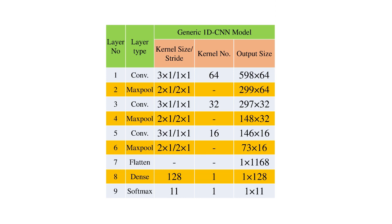The model consists of three convolution layers with ReLU activation, three max pool layers, one flatten layer, one dense layer with ReLU activation, and finally one softmax layer.